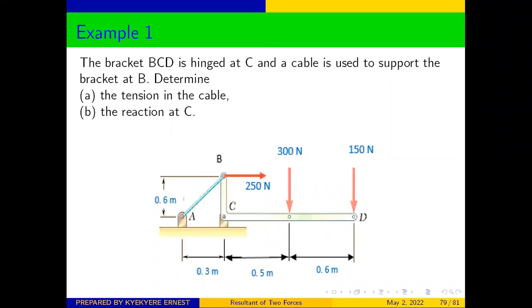The bracket DCD is hinged at C and the cable is used to support the bracket at D. Determine A, the tension in the cable, and B, the reactions at C. This is our diagram. Let's see how we solve this problem.